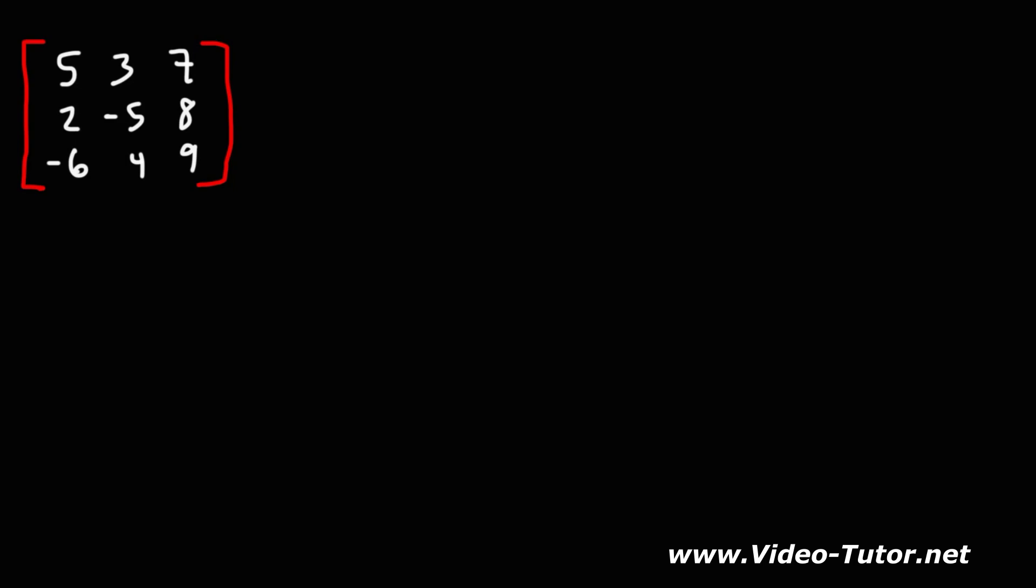In this lesson, we're going to talk about how to find the determinant of a 3x3 matrix, but we're going to do it using a shortcut method, or the easy way. So to begin, we are going to write the first column of the matrix: 5, 2, negative 6.